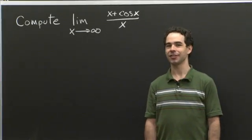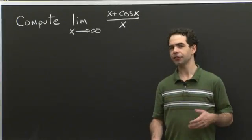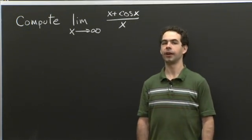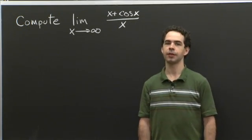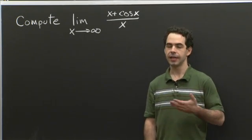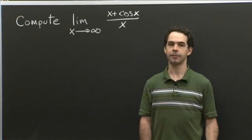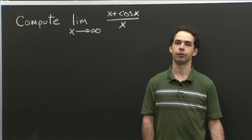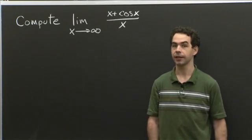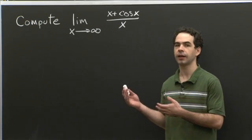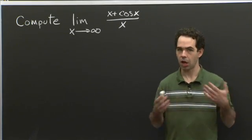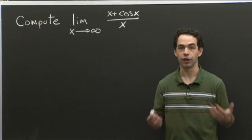Hi, welcome back to recitation. In lecture, Professor Jerison was teaching about L'Hôpital's Rule, and one thing he mentioned several times was that when you apply L'Hôpital's Rule, it's really important that the second limit exists in order for L'Hôpital's Rule to be true — for the first limit to equal the second limit. But he didn't give any examples of what can go wrong.